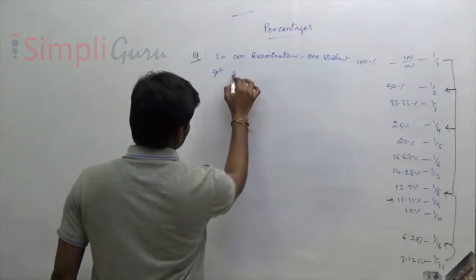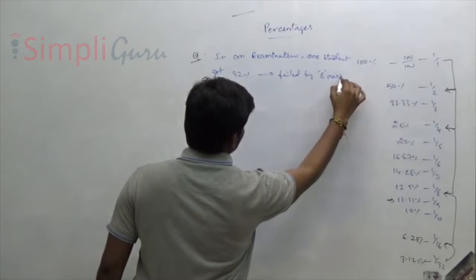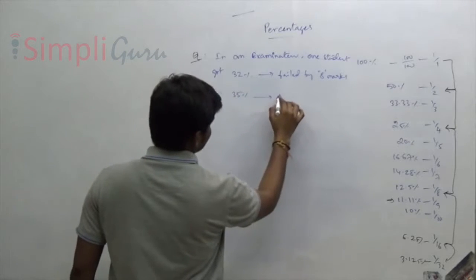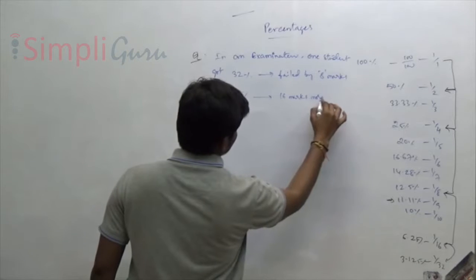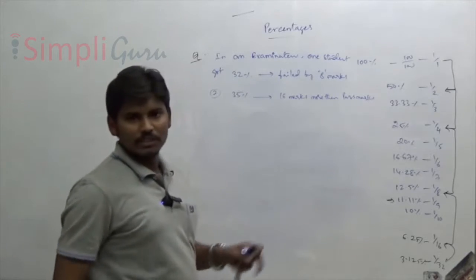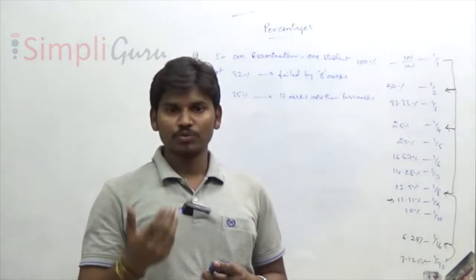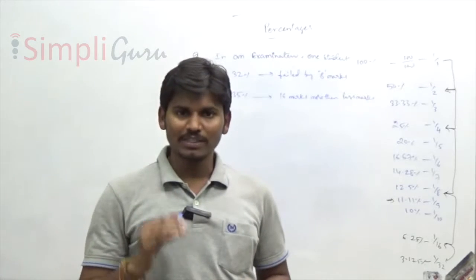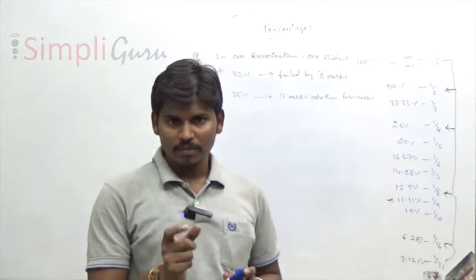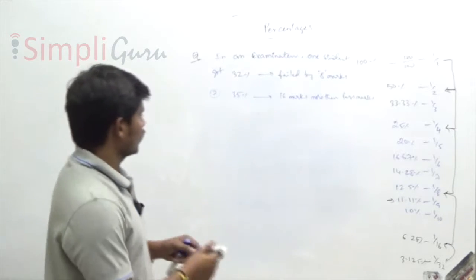One student got 32% and failed by 8 marks. Another student got 35% and he got 16 marks more than the pass mark. So one got 32% of total marks and failed by 8 marks; another got 35% of total marks and got 16 marks more than the pass mark. We need to find total marks, pass marks, and pass percentage.